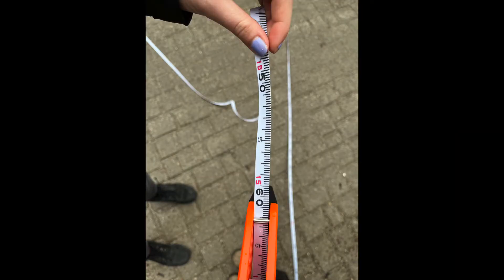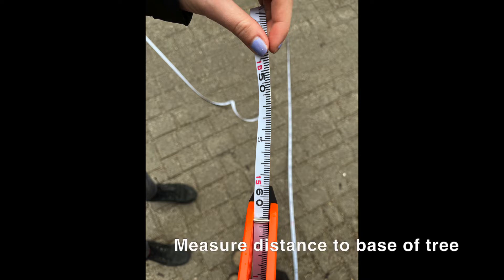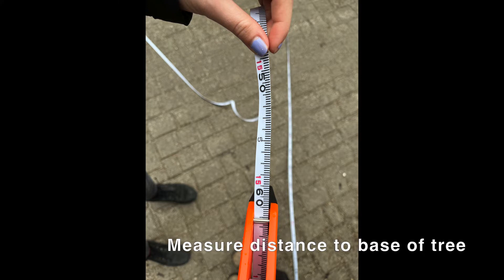The first thing you're going to want to do when you're outside before you even begin using your clinometer is measure where you are from the base of the tree. Using a measuring tape like we did you're going to want to measure from where your feet are to the base of the tree. In our case we got 15.6 meters.